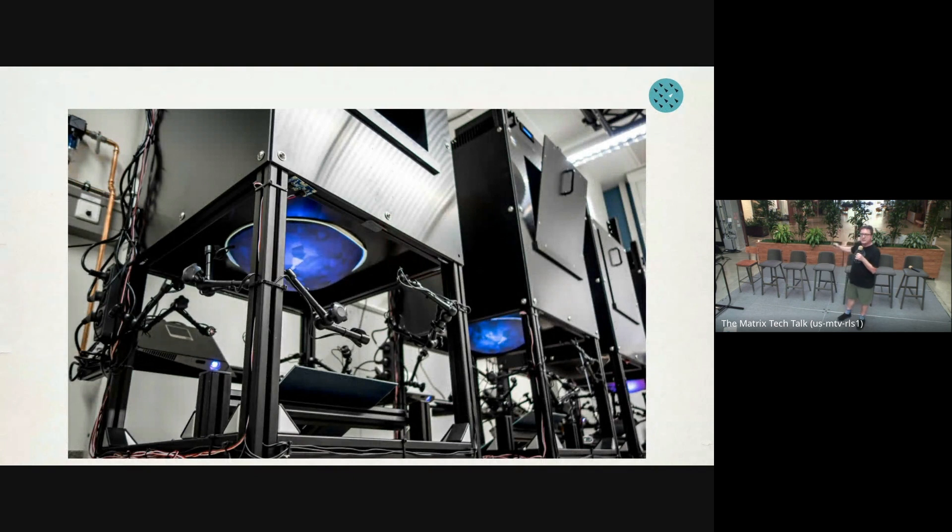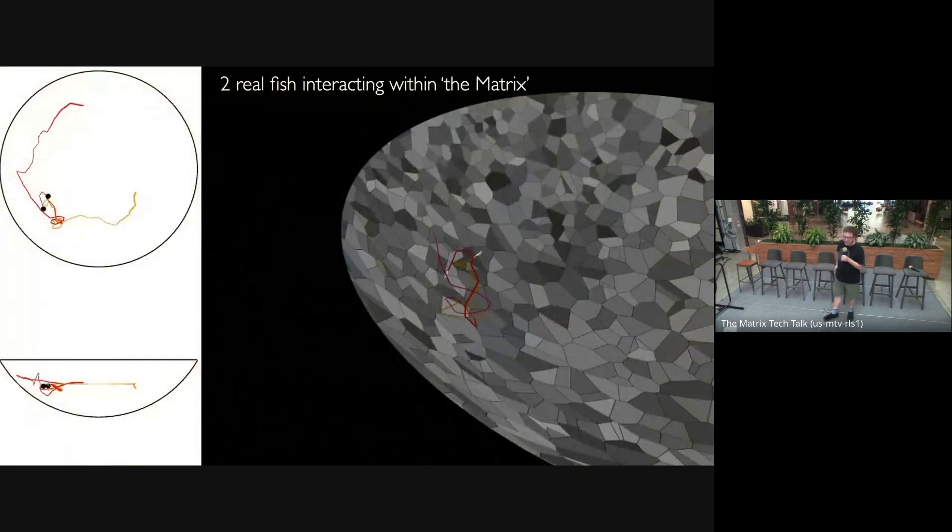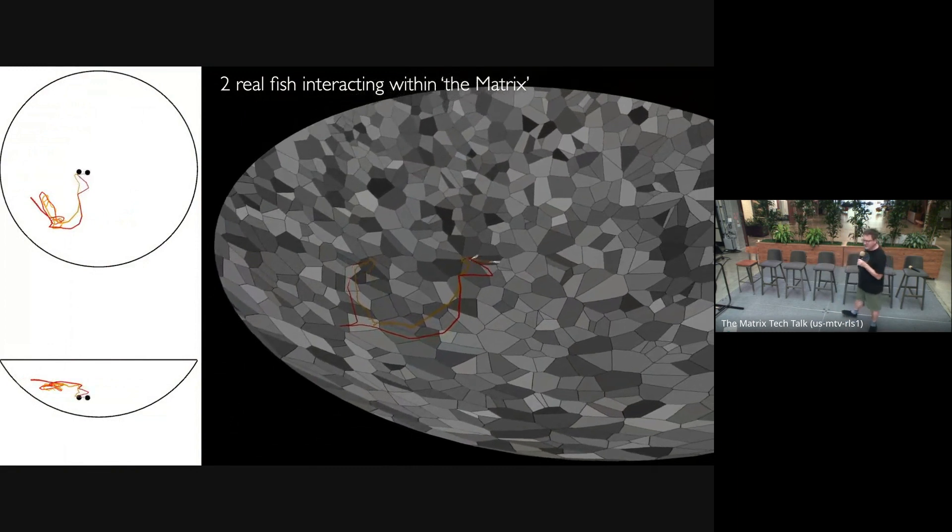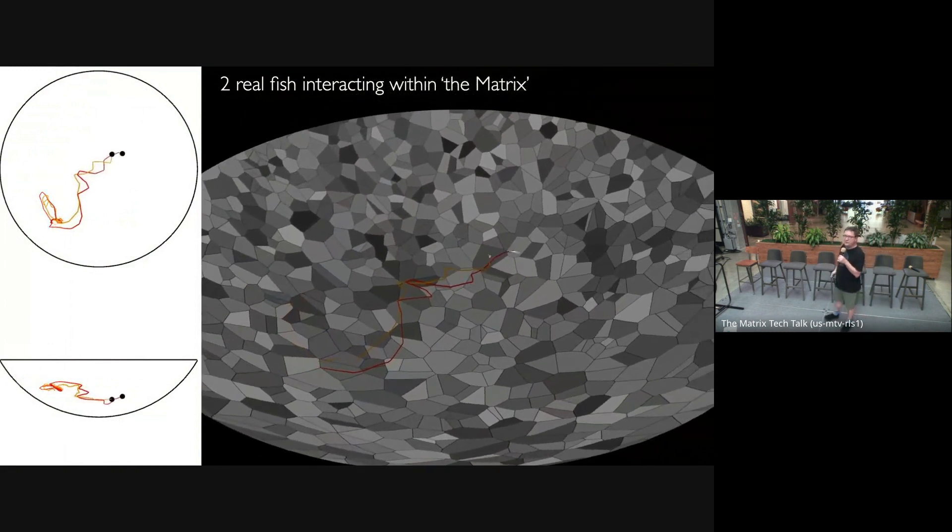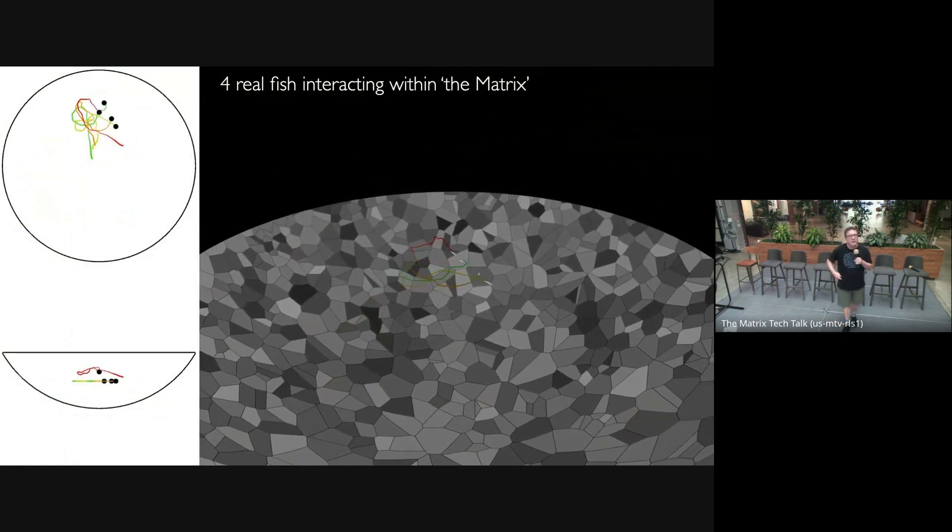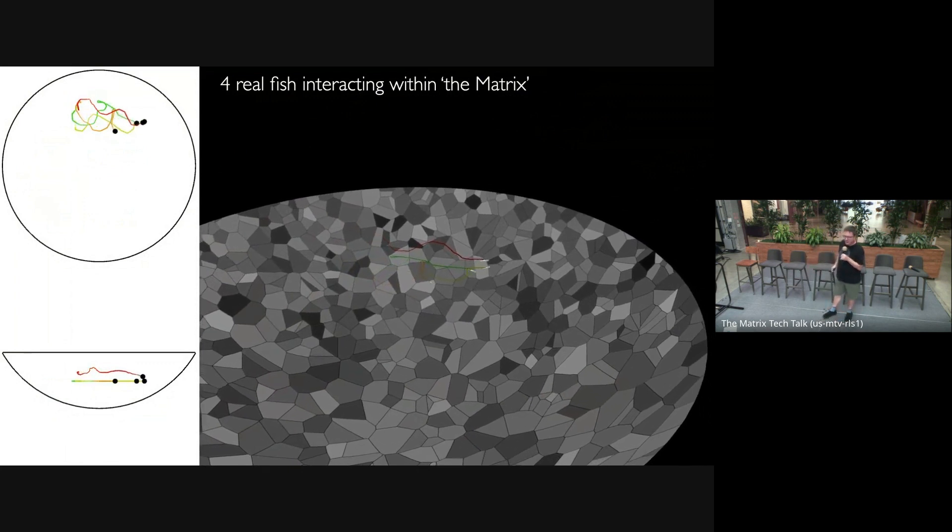Now, one problem with this is because we have to project the scene precisely for the eyes of one individual, we can't put more than one into each of these virtual reality arenas. But what we do is we network them together, so the individual in the near-most tank can interact with a real-time hologram of the individual in the second or the third, and we're building 15 of these at the moment. It's quite appropriate that we call this the matrix in this particular venue. And so here you're seeing two fish, or four fish, not interacting in the same physical world but interacting in the same holographic or virtual world. And of course, we can have avatars in there, and we can control anything we like.